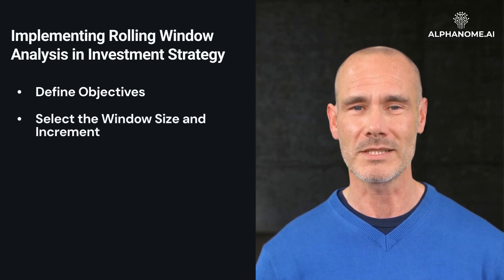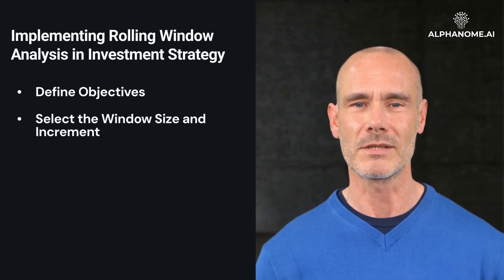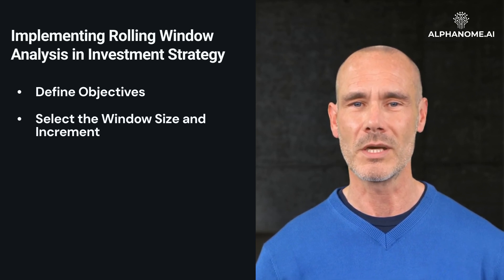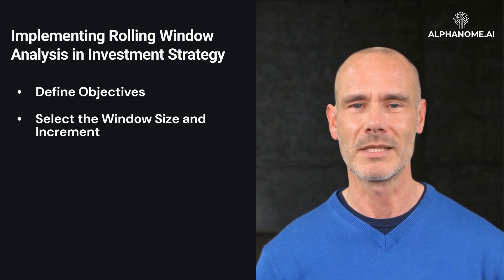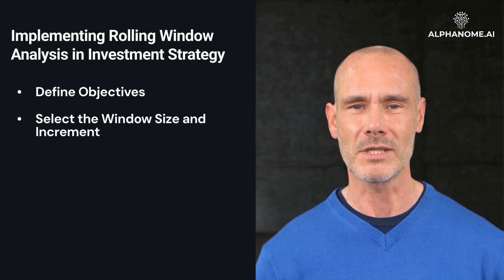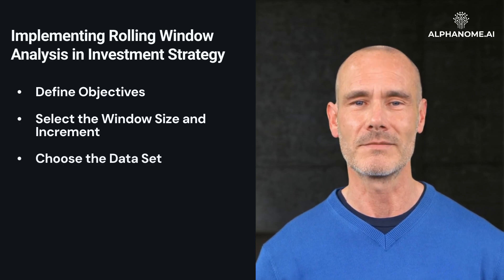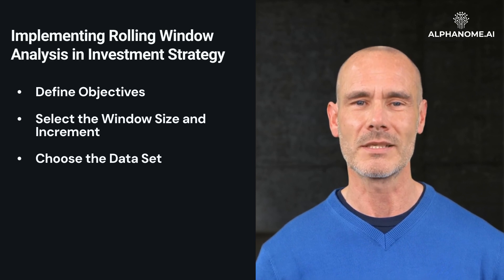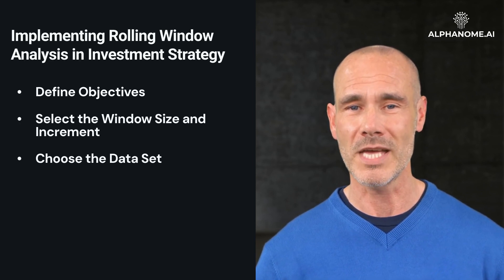Step 2 — Select the Window Size and Increment: choosing the right window size is crucial. A shorter window might be useful for high-frequency trading analysis, while a longer window could be better for long-term investment strategies. Similarly, the increment — daily, weekly, etc. — should align with the investment horizon. Step 3 — Choose the Data Set: depending on the objective, the data set could include stock prices, market indices, economic indicators, or portfolio returns. High-quality and relevant data is essential for accurate analysis.